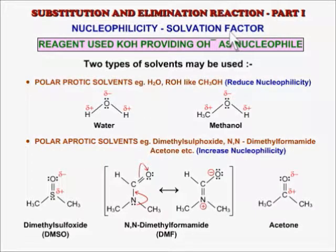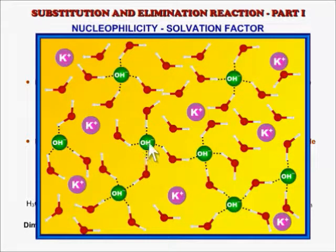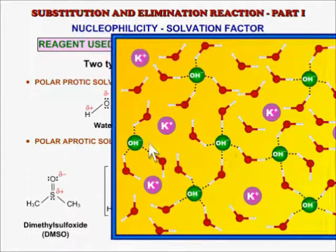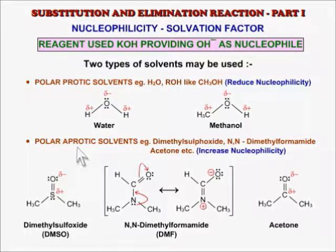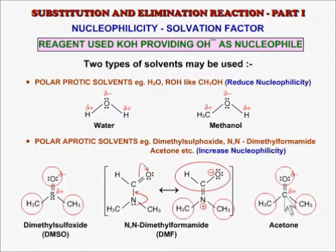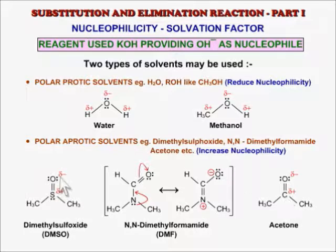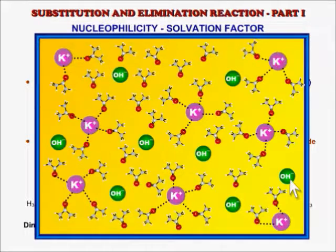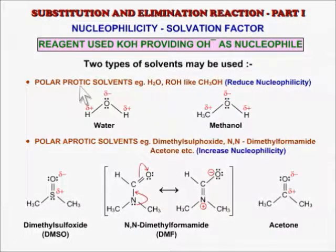Solvation factor. The solvent used in substitution and elimination reactions greatly influences the nucleophilicity of reagents. Polar protic solvents like H₂O and ROH tend to form hydrogen bonds with the nucleophile, thereby reducing its nucleophilicity. On the other hand, polar aprotic solvents like DMSO (dimethyl sulfoxide) or DMF (dimethyl formamide) have the partial positive charge surrounded by bulky groups and cannot bond with the nucleophile. Instead, the partial negative charge is on the outskirts of the solvent molecule, which readily bonds with the cationic part of the reagent, making the anionic nucleophile more active. So, polar protic solvents reduce nucleophilicity and polar aprotic solvents increase nucleophilicity.